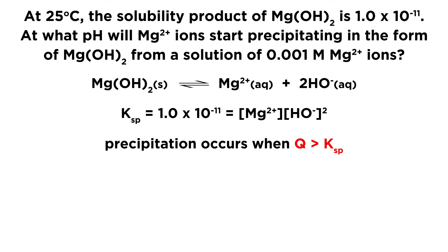Now we know that precipitation is going to occur when Q is greater than Ksp. So we need to have some information about these magnesium ion and hydroxide ion concentrations in order to say when precipitation is going to occur.